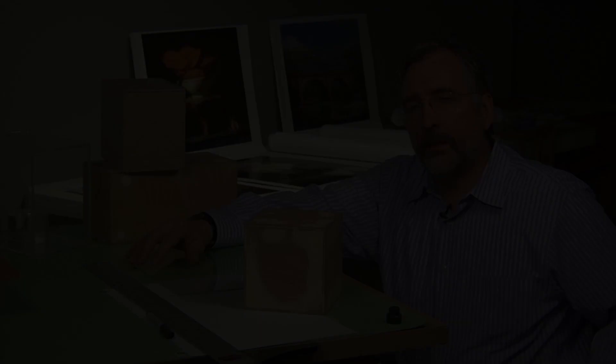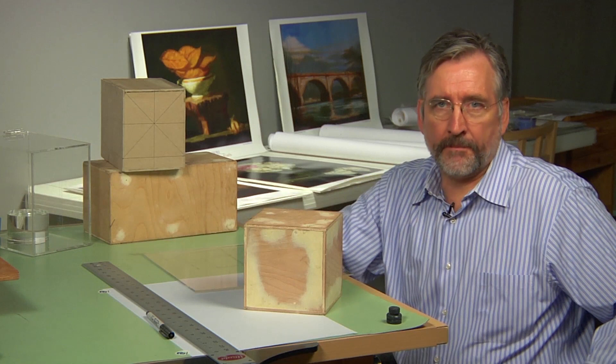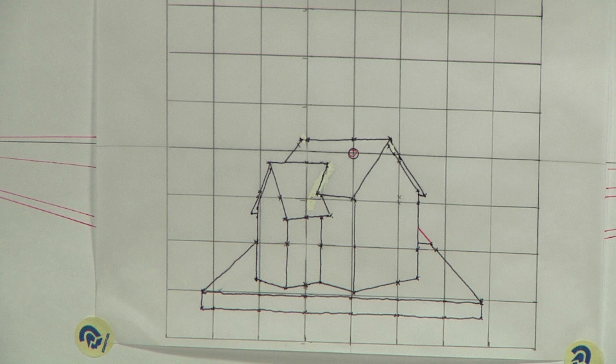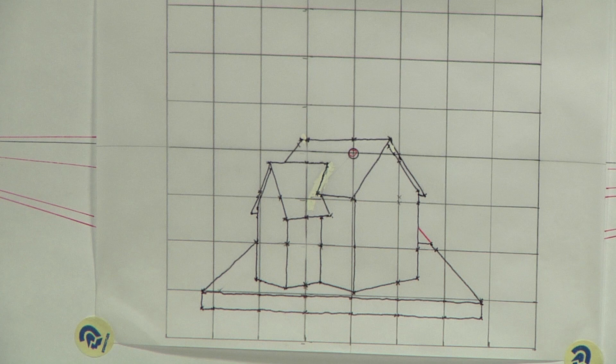Now that I've introduced you to the picture plane, we can now discuss one point, two point, and three point perspective. Let's start with one point. You saw that in the Albertian veil drawing that an example of something in one point perspective was the base that the house sat upon.